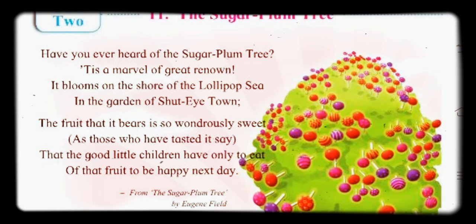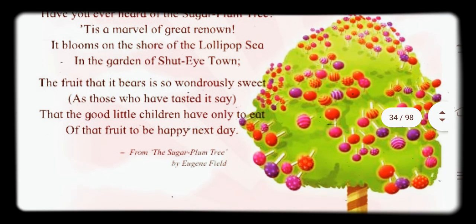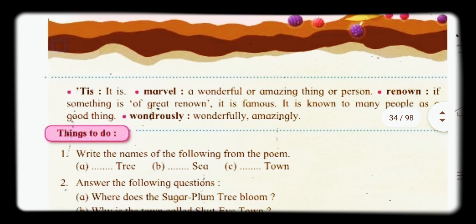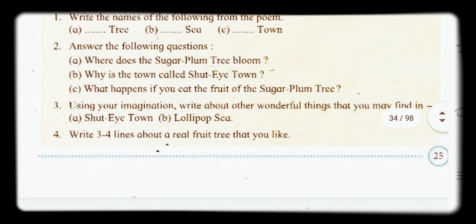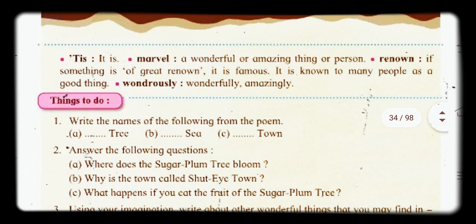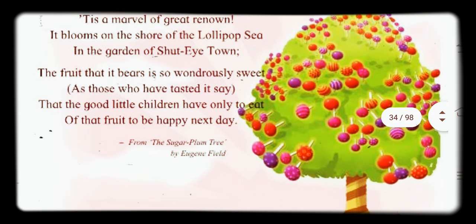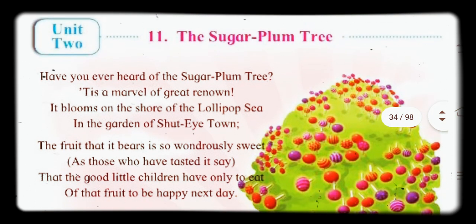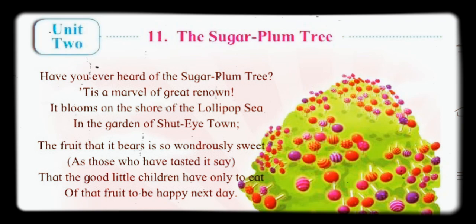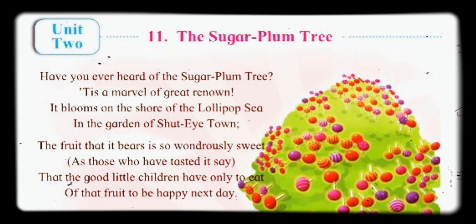The name of the poem is 'The Sugar Plum Tree.' The page number is 25, poem number 11, unit 2. Have you ever heard of the sugar plum tree? It is a marvel of great renown. It blooms on the shore of the lollipop sea,